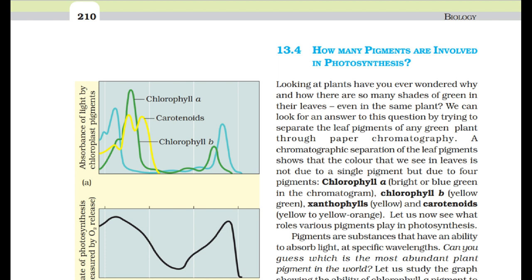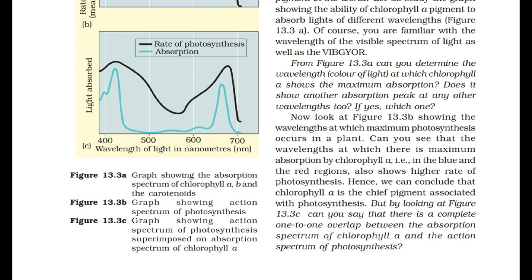Pigments are substances that have an ability to absorb light at specific wavelengths. The wavelengths at which there is maximum absorption by chlorophyll A — in the blue and the red regions — also show the higher rate of photosynthesis. Hence, we can conclude that chlorophyll A is the chief pigment associated with photosynthesis.